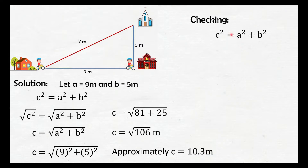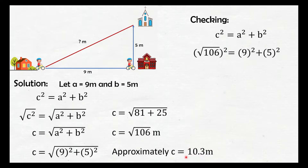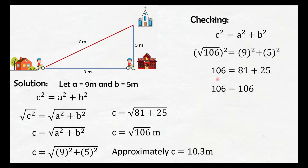Checking using the Pythagorean theorem: substitute all values of A, B, and C. C = √106, A = 9, B = 5. Squaring both sides: the radical cancels, 9² = 81, 5² = 25, and 81 + 25 = 106. So 106 = 106. The distance from the boy's house to where the boy is now — the church — is √106 meters.